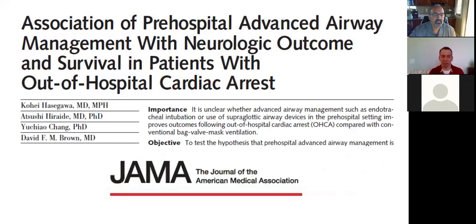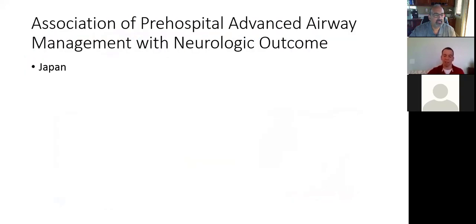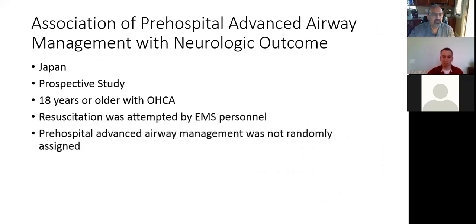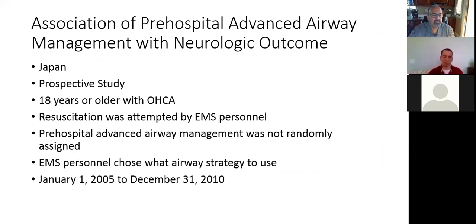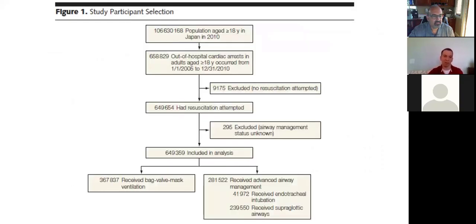So next study I want to talk about was this study out of Japan. Studies out of Japan are great because they have so many numbers to look at. It was a prospective study, adults resuscitation by EMS. And nothing was randomly assigned. They just took a look at what they got and how the patient did. It's from 2005 to 2010. In that five-year period, they had almost 659,000 adult cardiac arrests. Out of those, BVM group was 367,000. About 42,000 was endotracheal intubation. About 240,000 was a supraglottic airway.